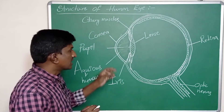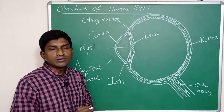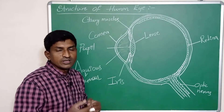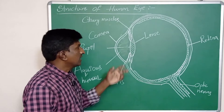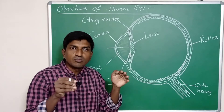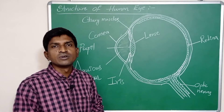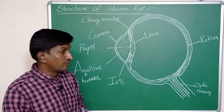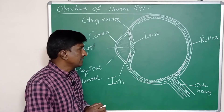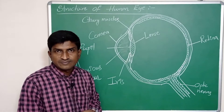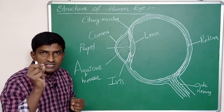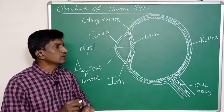The iris controls the entering of light into our eye through the pupil. Whenever we are observing very low light, the iris allows the pupil to expand, so more light enters into our eye. Whenever we are observing bright or intense light, the iris contracts, and the size of the pupil decreases, so very low light enters into our eye.